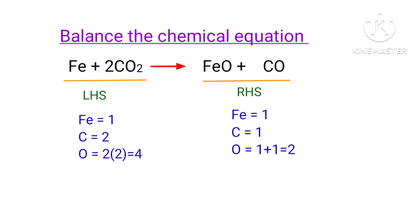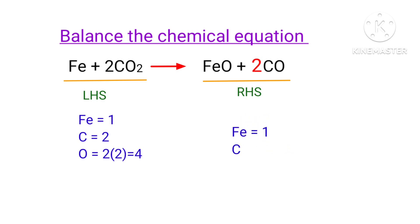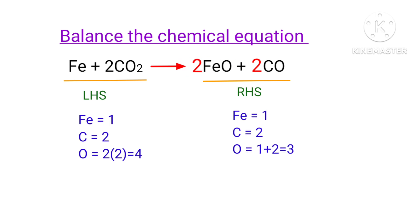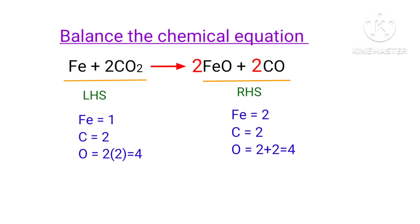The carbon atoms are balanced. Now we need to balance the oxygen atoms. To do this, we need to put a coefficient of two in front of FeO. The oxygen atoms are balanced.